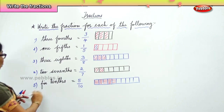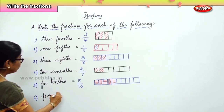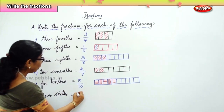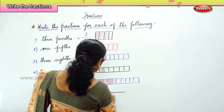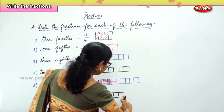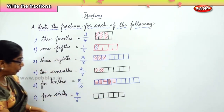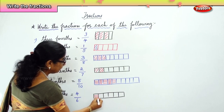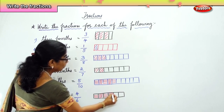And finally we'll do one more — four-sixths. Four-sixths is four parts out of six parts: one, two, three, four, five and six. We shade four parts: one, two, three and four.